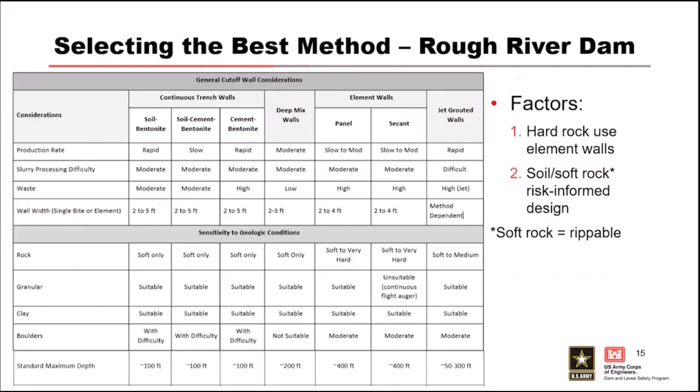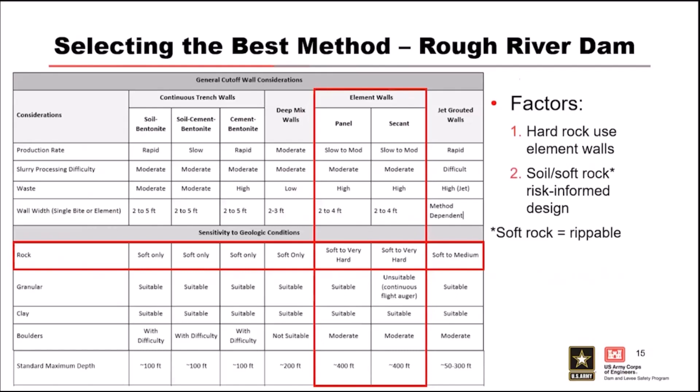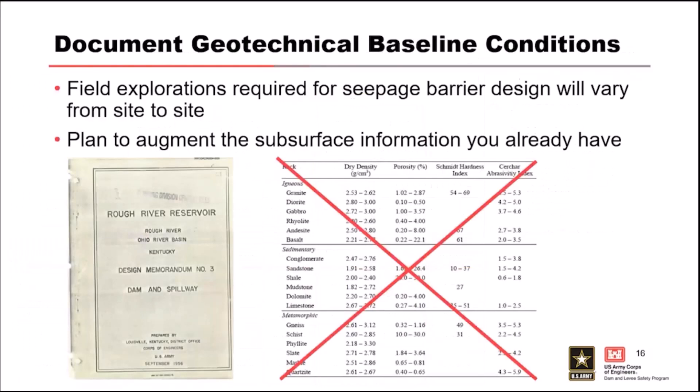For Rough River, this was a pretty easy decision. We have hard rock, which locks us into the element wall methods — panel sequence or some combination of the two. If you have soft rock or you're doing some kind of continuous wall, there are plenty of other methods that can be selected. So now we know we need to put a wall through rock. We have karstic bedrock, it's hard rock, and we need to get a seepage barrier through there.